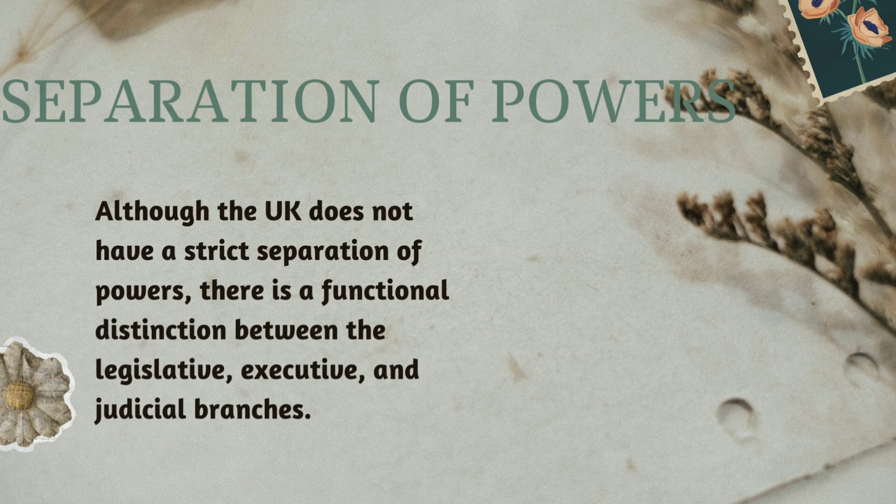The UK does not have a strict separation of power. There is a functional distinction between the legislative, executive, and judicial branches. In Britain there is no separation of power, but the functions are divided — legislative, executive, and judicial functions.